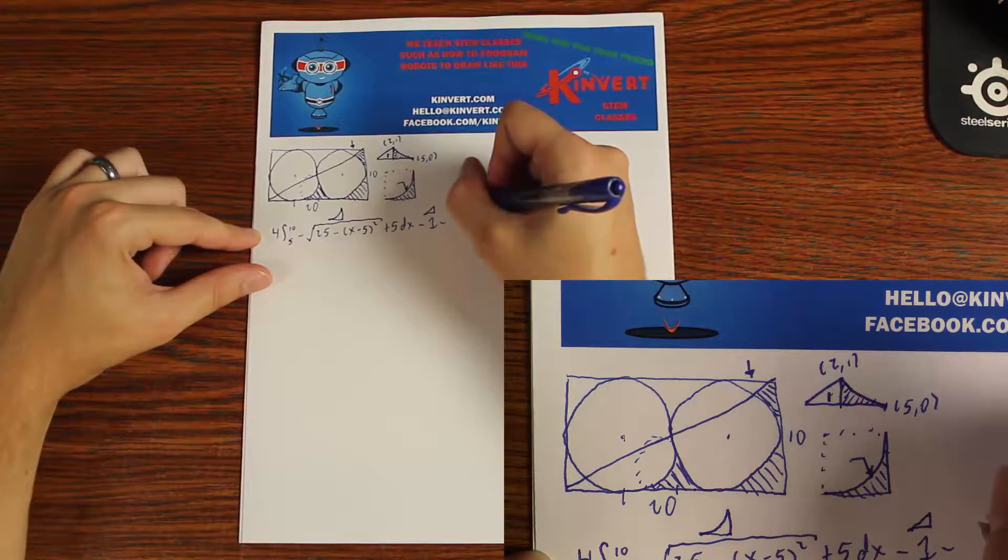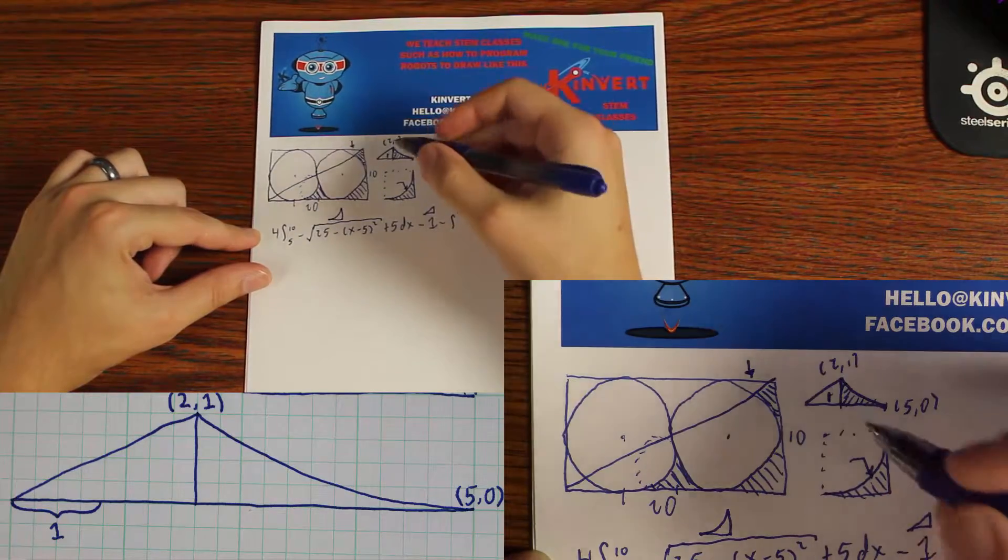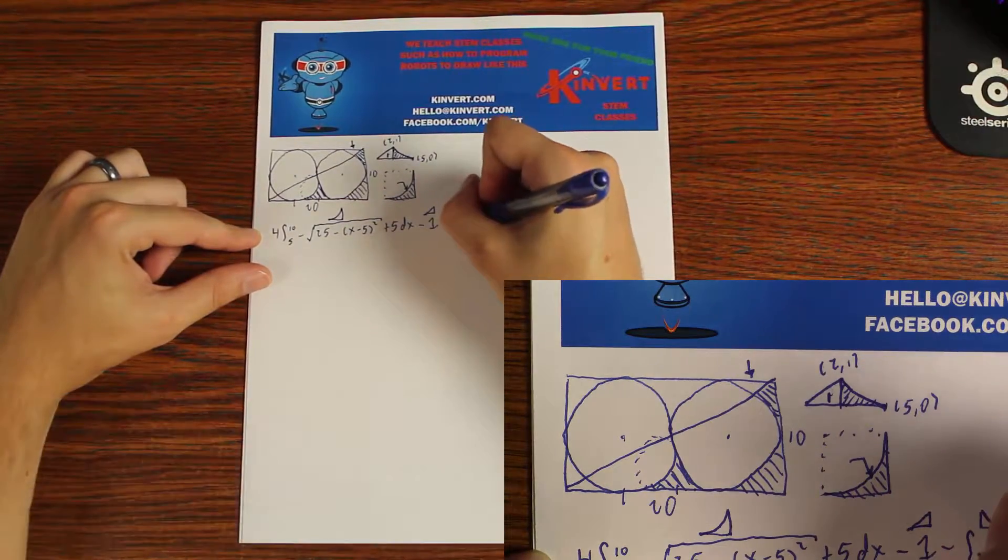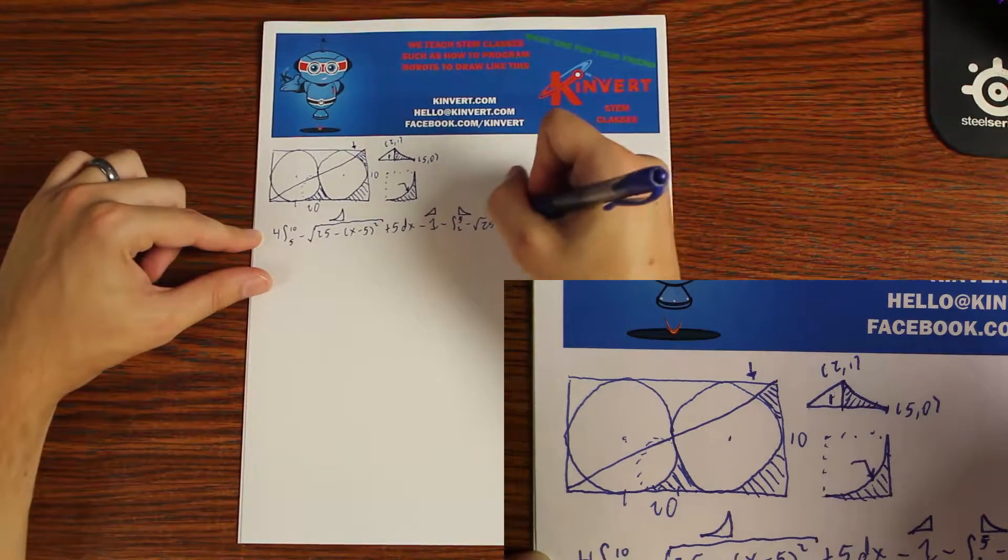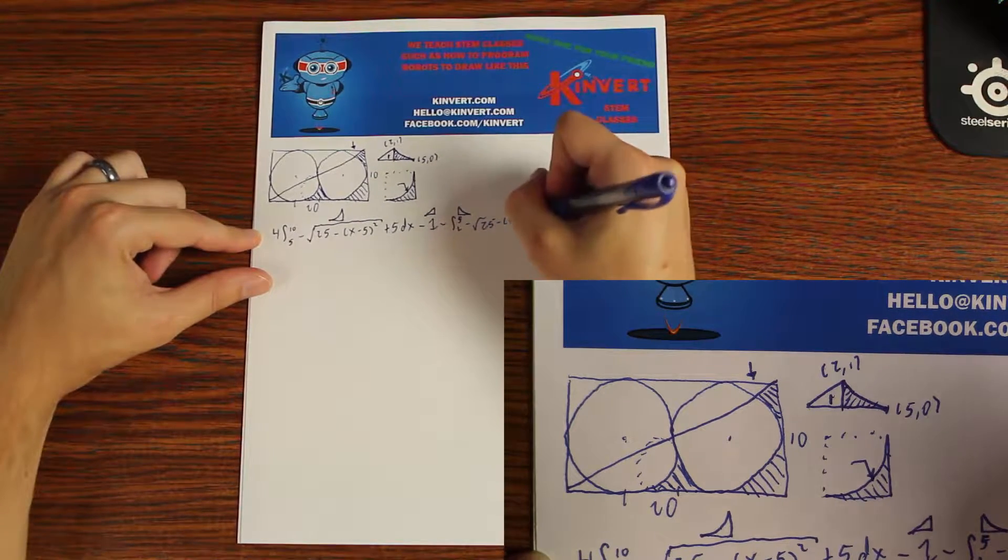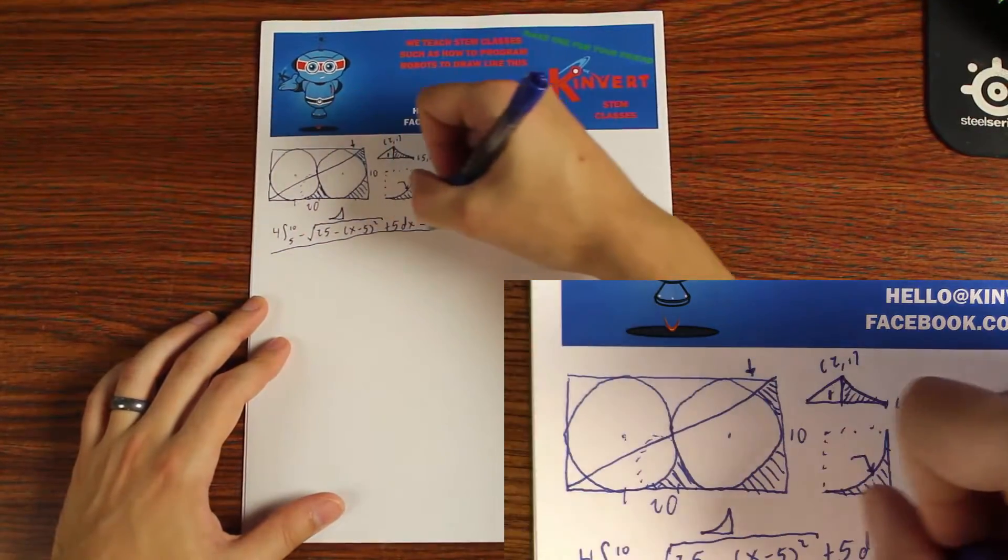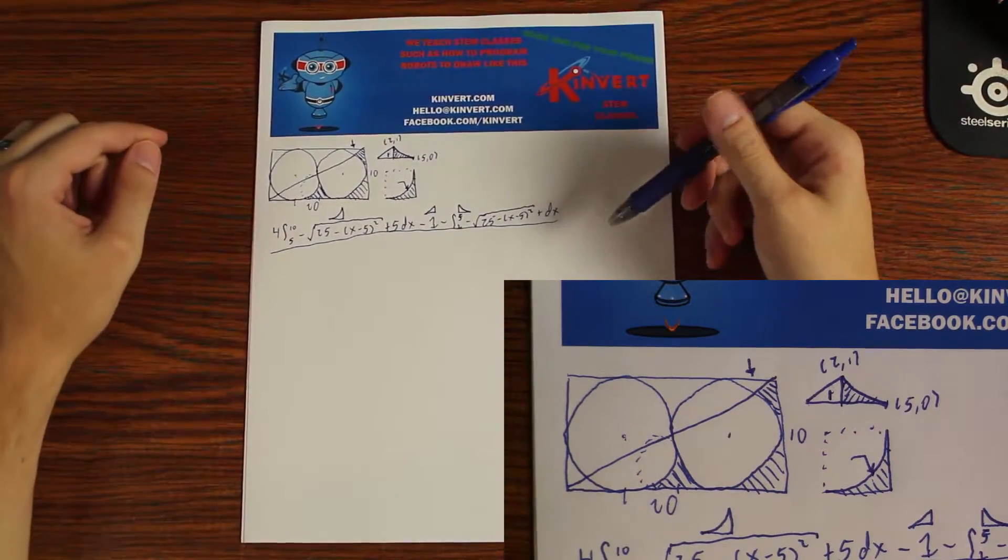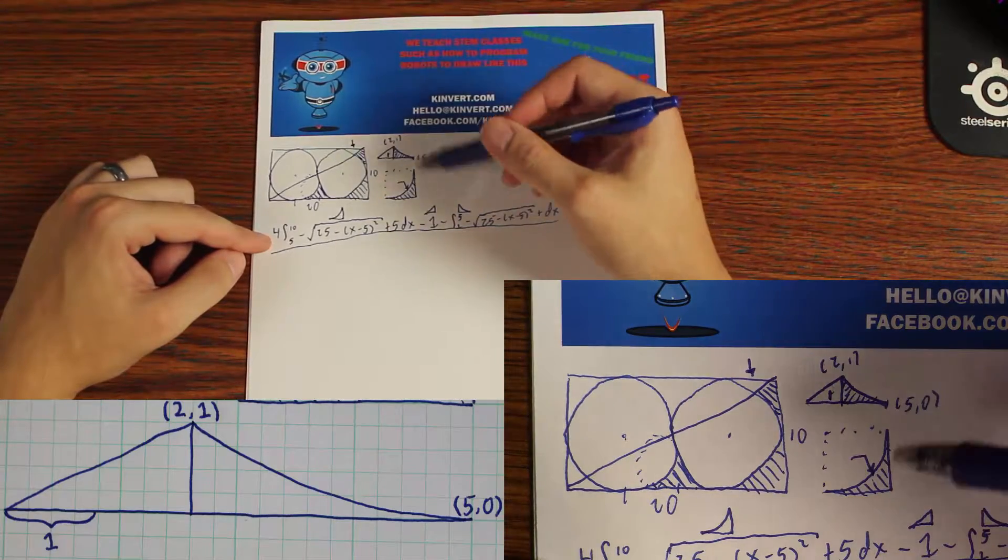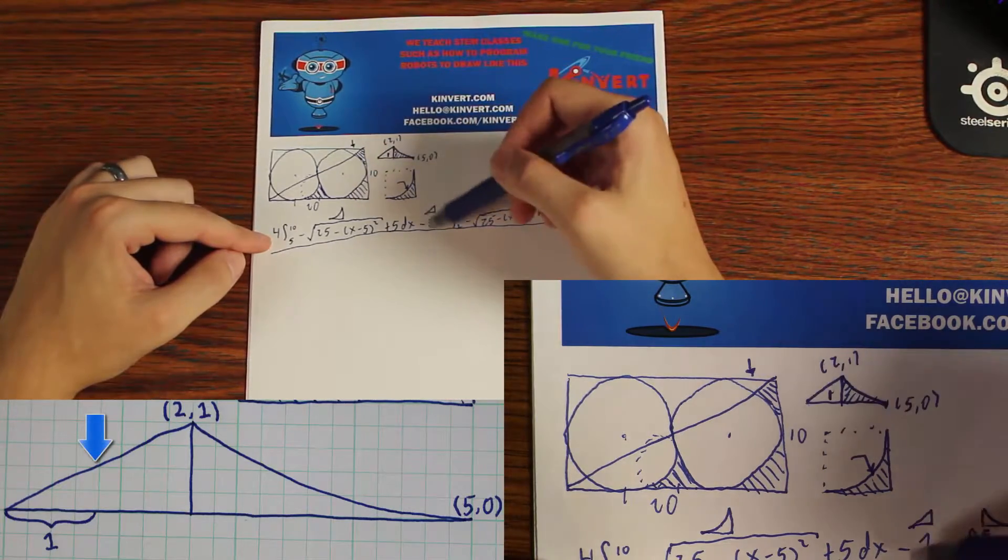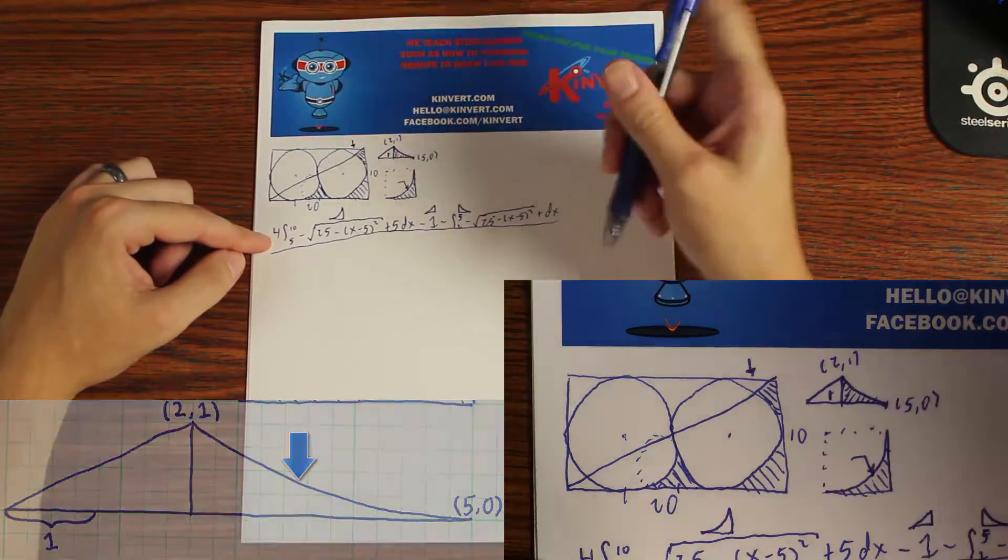This is this shape. And now we need to also subtract away the area that's made by the circle. So how are we going to do that? We're going to go from 2 to 5 in the x direction. And again, it's the same exact equation. We're looking at the bottom of the semicircle. The square root of 25 minus x minus 5 squared plus 5 dx. And so this will get you the answer. If you know how to do the calculus for this, this will get you the answer.